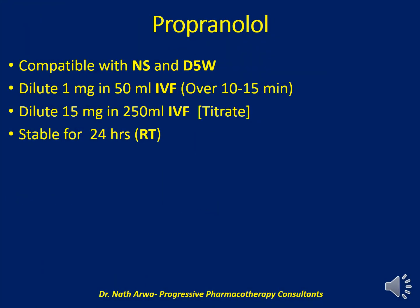Propranolol is compatible with both 5% dextrose in water and normal saline. 1 mg doses should be diluted in 50 ml, and 15 mg in 250 ml of IV fluid. After homogenizing, the 1 mg dose can be infused over 10 to 15 minutes, while the higher dose of 15 mg should be titrated according to your critical care or cardiac team. Such IV admixed solutions are stable for 24 hours at room temperature.